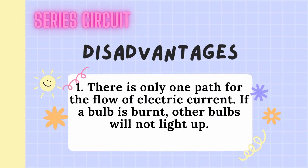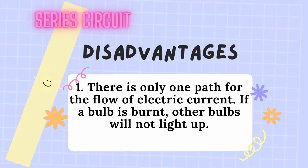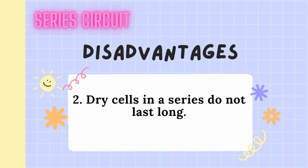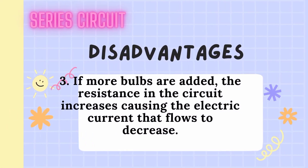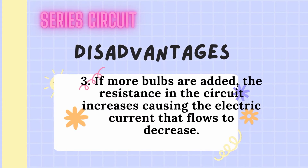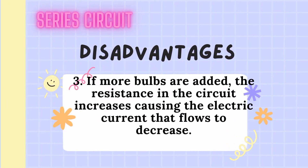Disadvantages of a series circuit. 1. There is only one path for the flow of electric current — if a bulb is burned, the other bulbs will not light up. 2. Cells in series do not last long. 3. If more bulbs are added, the resistance in the circuit increases, causing the electric current that flows to decrease.